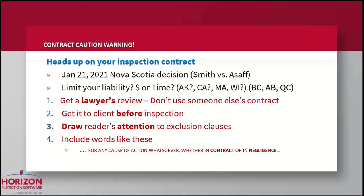There was quite a discussion around the importance of drawing the reader's attention to any exclusion clauses. If you're not handing somebody a contract on-site at the beginning of an inspection, make sure that in the document you send, the beginning makes it crystal clear — in all caps or something equivalent — that this agreement limits the liability of the home inspector. Don't bury it in paragraph 13 or somewhere likely to be overlooked, because courts do not like that and will look for any reason to throw out the limitation of liability clause. On the slide, I've crossed out some states and provinces where limitation of liability clauses are simply not allowed: Massachusetts, British Columbia, Alberta, and Quebec definitely prohibit them. Alaska, California, and Wisconsin have question marks — it's a little more confusing. This is one more reason you need to work with a lawyer, because the jurisdictions are different.